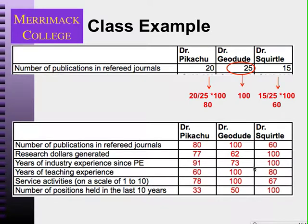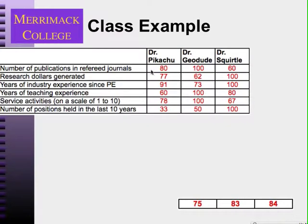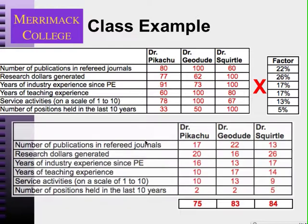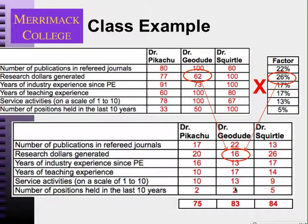Now the next step is to multiply these normalized raw scores by the weighting factors, because each criterion is not equally important — some are more important than others. We multiply each row by its factor; for example, we multiply this row by 22% and this row by 26% because it's more important, and so on. This generates a weighted table. For example, this number comes from multiplying the raw score of 62 by the factor of 26% — 26% of 62 is 16. If we add up each of these columns, we get a total weighted score for each alternative.